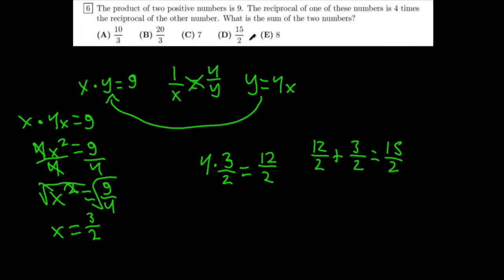And 12 halves plus three halves equals 15 halves. And as you can see in the answer choices, your correct answer is D. D. 15 halves. And that's your answer.